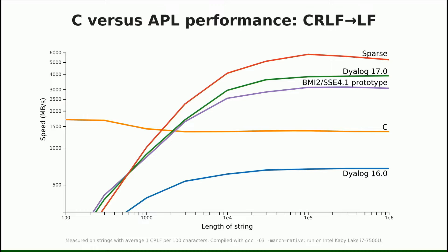This is part of compress, which is replicate with a Boolean left argument. What it does is first count the number of set bits in the left argument — it has to count them anyway to determine the shape of the result. If that number is small enough, rather than doing work for every byte using the vectorized algorithm, it reads through the left argument an entire 64-bit word at a time and only does something when it finds a one.